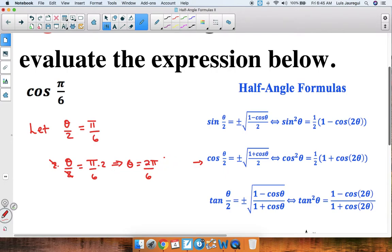Now dividing both numerator and denominator by 2, we get that this is simply pi over 3. So theta is equal to pi over 3.